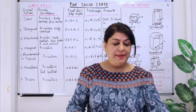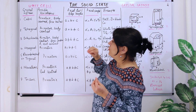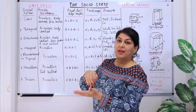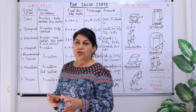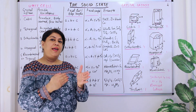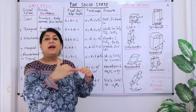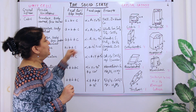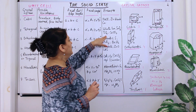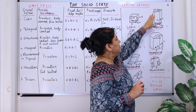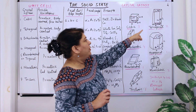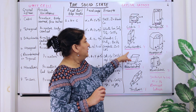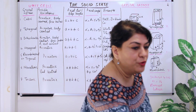For a tetragonal unit cell, a is equal to b but not equal to c — length and breadth are equal but the height is different. The angles are all right angles: alpha is equal to beta is equal to gamma is equal to 90 degrees. Examples of this arrangement are white tin, tin oxide, tellurium oxide, and calcium sulfate.